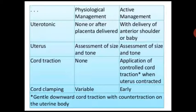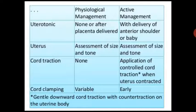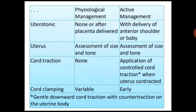There are two approaches to management: physiological management and active management. For uterotonics, physiological management uses none or gives them after placenta delivery, while active management administers them with delivery of the anterior shoulder and baby. For cord traction, physiological management uses none, while active management involves application of controlled cord traction when the uterus is contracted.